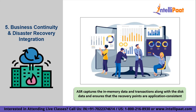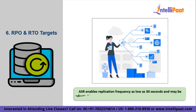Finally, we have RPO and RTO targets. RPO signifies recovery point objectives whereas RTO signifies recovery time objectives. ASR enables replication frequency as low as 30 seconds and may be adjusted to meet RPO and RTO requirements particular to the company. RTO may be lowered further by connecting automation runbooks with your recovery plans as well as integration with traffic manager. Recovery plans are extremely customizable, allowing for the rapid and sequential failover and recovery of multi-tiered applications such as databases and web services.